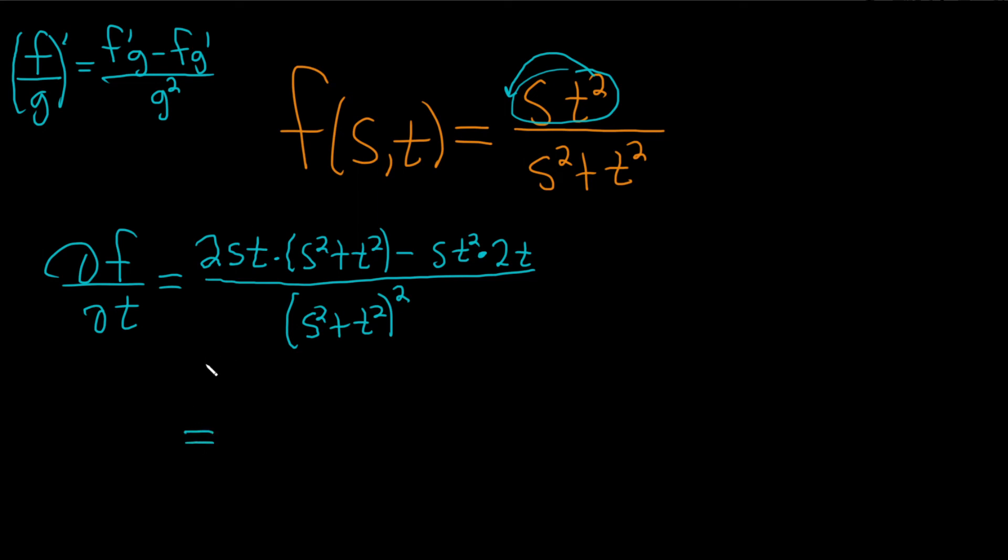So now we'll go ahead and distribute this. Let's see, when we multiply this times this, looks like we can combine the s's. So we have 2s cubed t, and then this times this, we can combine the t's plus 2st cubed, right? Because you add the exponents on the t's.